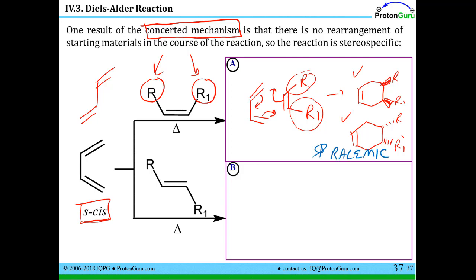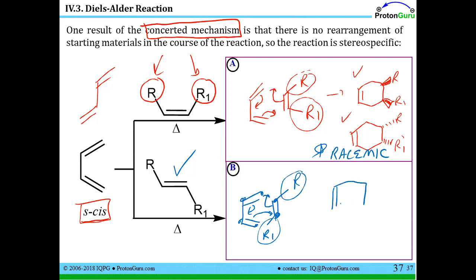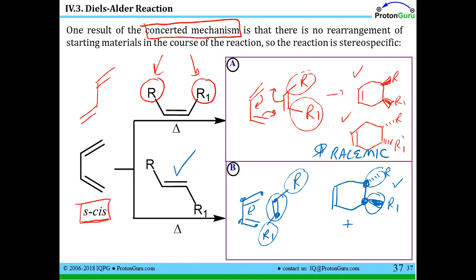A similar thought process applies if we use the trans isomer as the dienophile. We have R1 and R, and the same arrow pushing applies — we only involve the carbons that have double bonds; these other groups are sort of extraneous decorations. You can sketch in your core and track that the two atoms from the alkene — the dienophile. Because it's a concerted mechanism and R and R1 point in opposite directions, there's no chance to rearrange. We're going to get trans distribution of R1 and R in the product as well, plus the enantiomer — so again a racemic mixture. When we start with achiral starting materials and get a chiral product, we always get a racemic mixture.